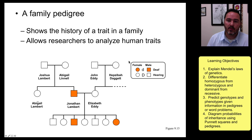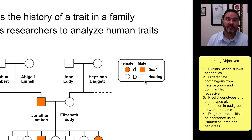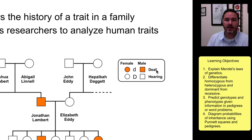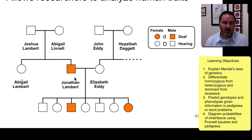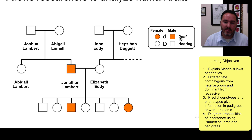In this family pedigree, we're looking at a characteristic of deafness. We'll assume this particular type is controlled by a single gene where the dominant allele means hearing and the recessive allele means deaf. We represent females by circles and males by squares. Here we have Jonathan Lambert and Elizabeth Eddy. Jonathan is colored in, meaning he's deaf, so he must be homozygous recessive — little d, little d.